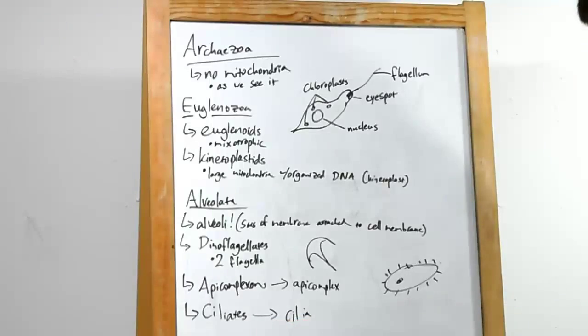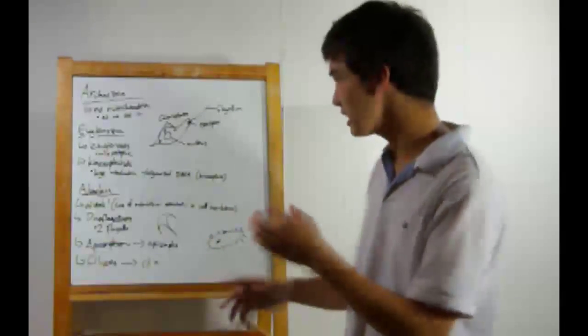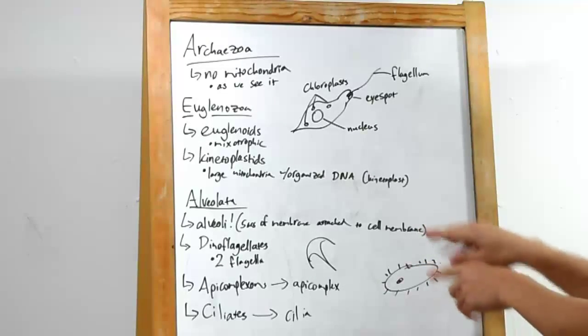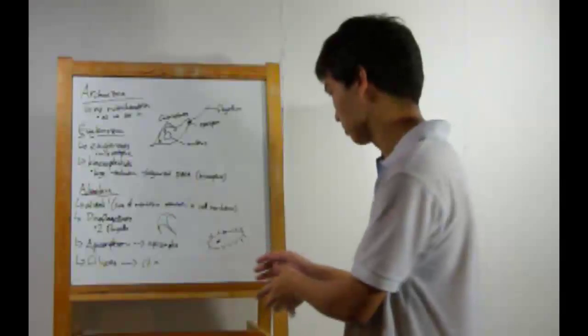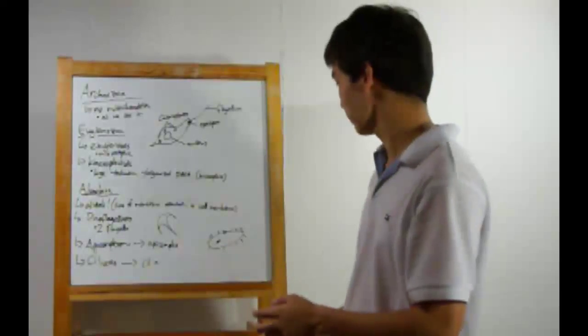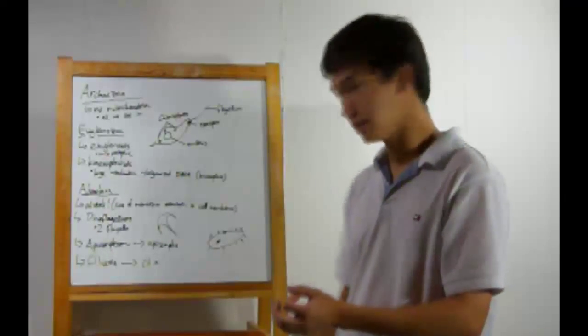Alright. Last up, ciliates. These are covered with cilia, which are kind of like miniature flagella. Gives them a kind of fuzzy appearance. But all these will beat in more or less unison, kind of like oars to a very large boat, to propel ciliates through whatever substance they're in. A good friend of ours, the paramecium, is one of them.